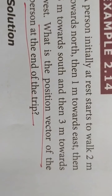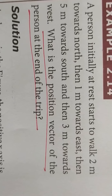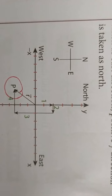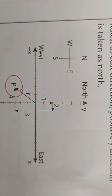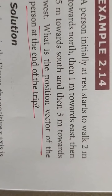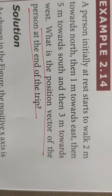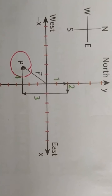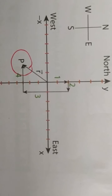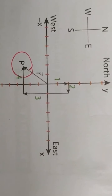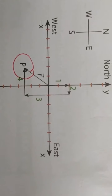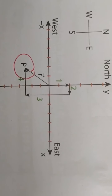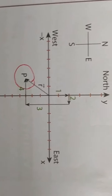Here one more example is given. A person is travelling in different directions and we need to find the final position. North, east, south and west are marked in the diagram. The person starts at rest and walks 2 meters north, then 1 meter east, then 3 meters south, and again 3 meters in the east-west direction, finally reaching point P. You draw a vector from the origin to point P to find the position vector.